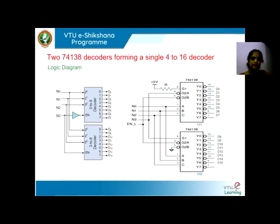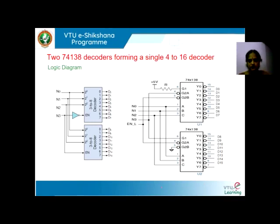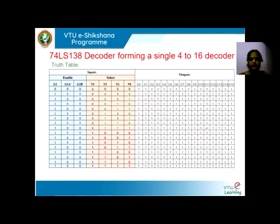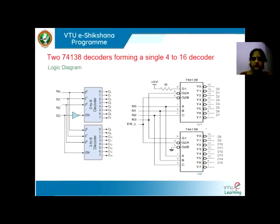Once the first IC is selected, based on the status of the other three inputs, one of the outputs D0 to D7 will be selected. For inputs from 8 to 15, N3 becomes high. N3 has been connected to the G1 input of the second 74LS138, so the second 74LS138 will be selected and outputs from D8 to D15 will be generated.